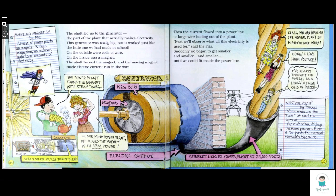The shaft led us to the generator, the part of the plant that actually makes electricity. The generator was really big, but it was just like the little one we had made in school. On the outside was coils of wire. On the inside was the magnet. The shaft turned the magnet and the moving magnet made electricity current running in the wire. Then the current flowed into a power line on a large wire leading out of the plant.